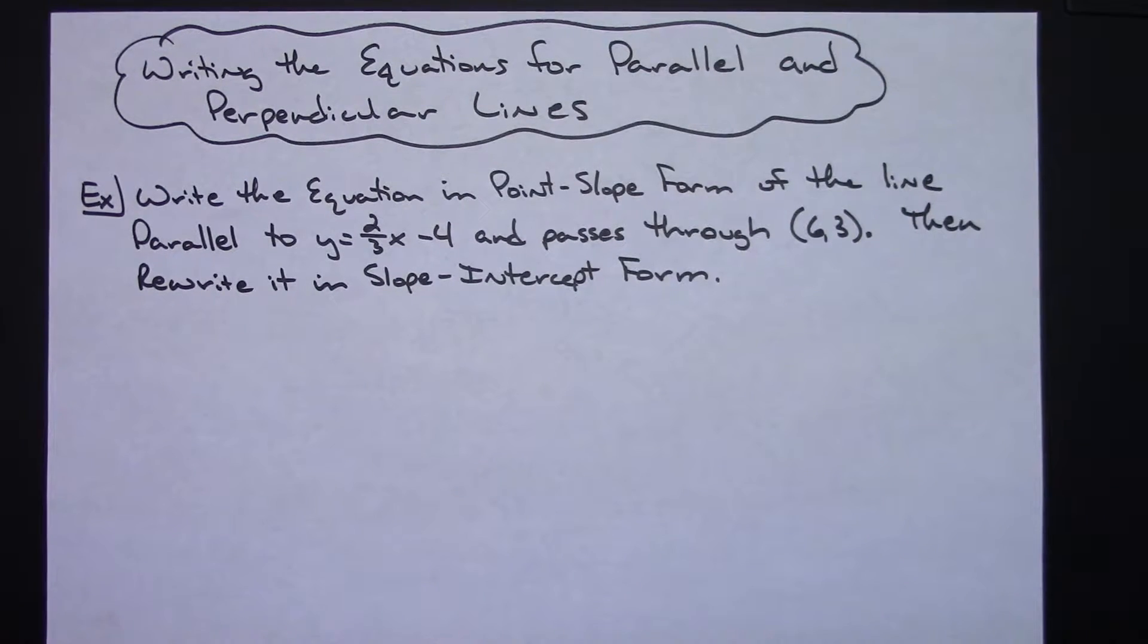I am assuming that you already have some background knowledge in this, as in you know what point-slope form is, you know what general form is, standard form, and slope-intercept form.